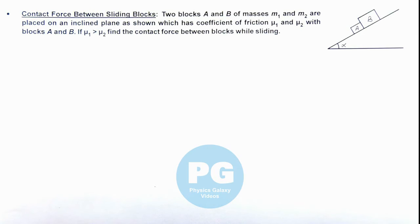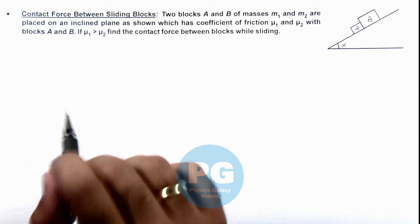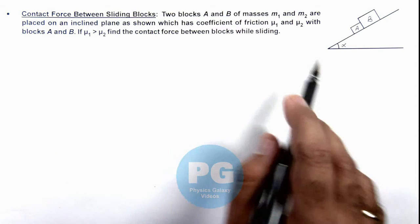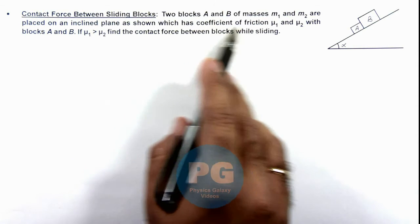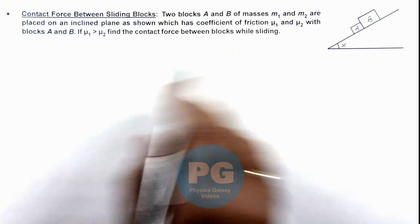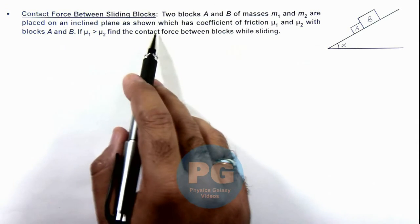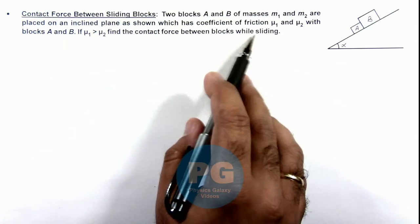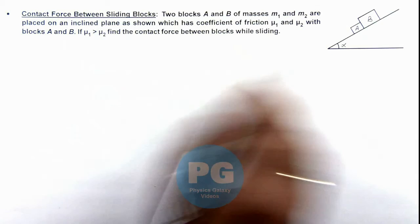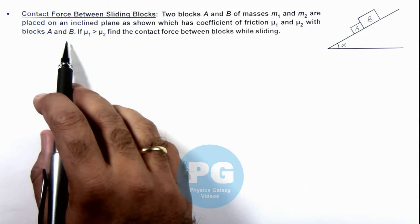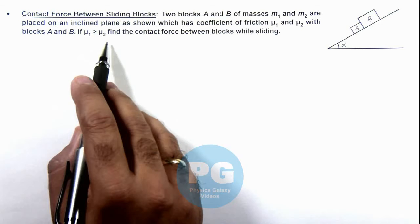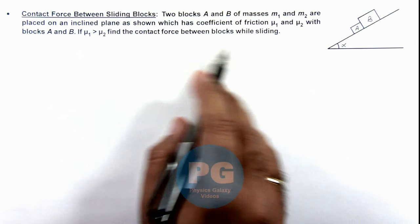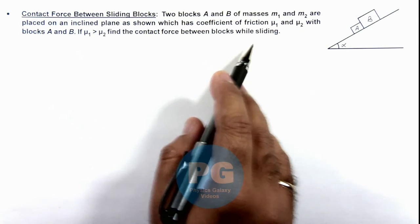In this illustration we'll discuss about the contact force between sliding blocks. We are given 2 blocks A and B of masses m1 and m2 which are placed on an inclined plane. The coefficient of friction with blocks A and B are mu1 and mu2 respectively. Given that mu1 is greater than mu2, we are required to find the contact force between the blocks while sliding.